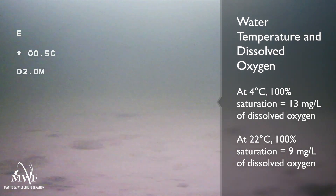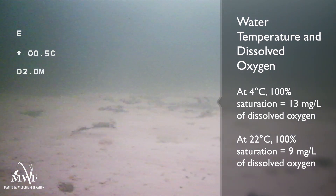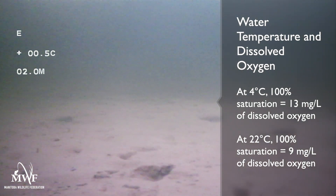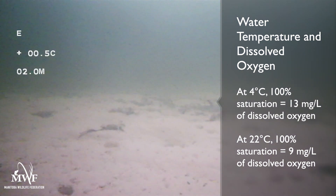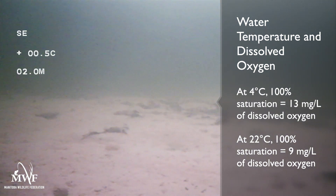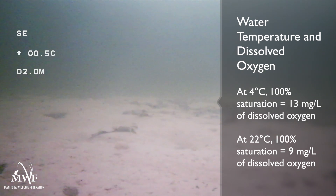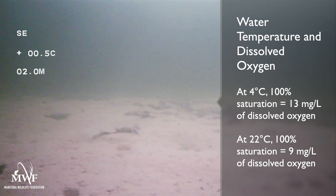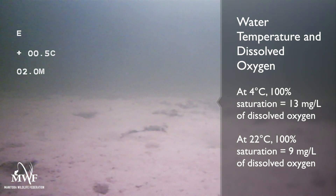Colder water is able to hold more DO than warmer water, so in the winter, early spring, and fall, the colder water can hold a lot more dissolved oxygen. In the summer, however, and especially during prolonged periods of very hot and calm weather, lakes can actually lose oxygen back to the atmosphere when the water becomes too warm.